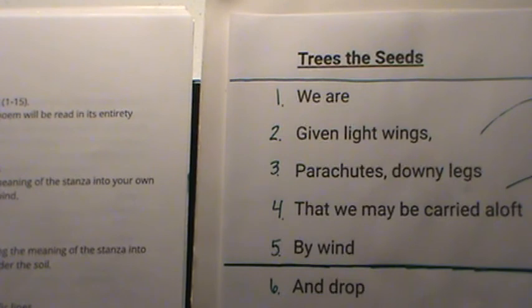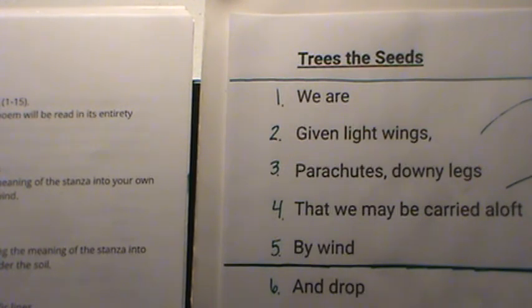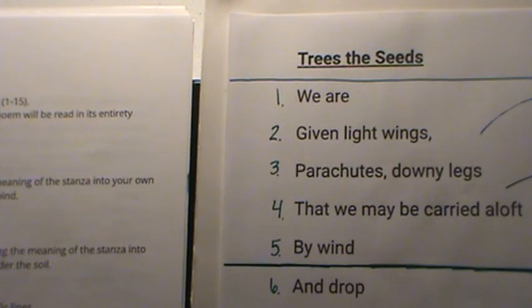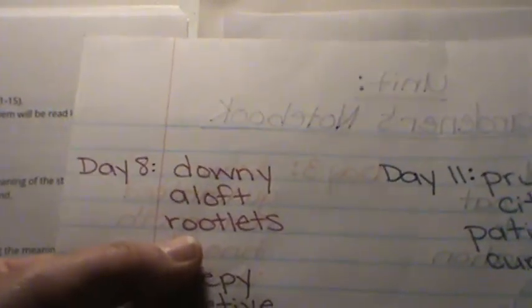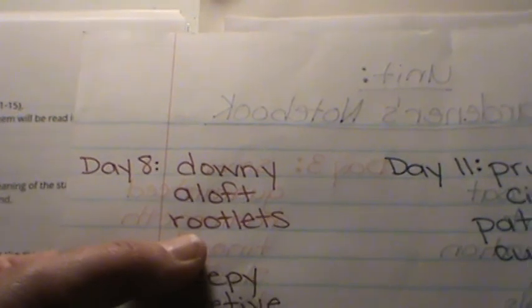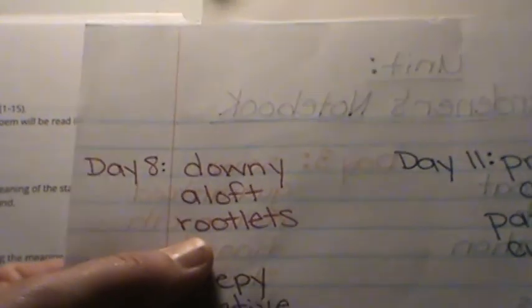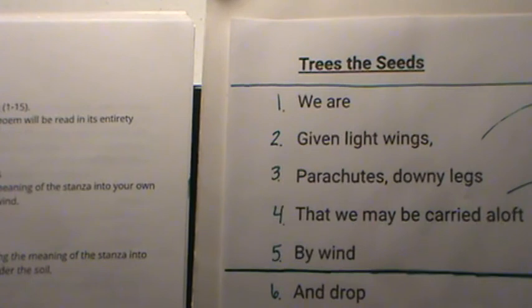Since we're not in class, I can't chart the poem for all of you to see. The only thing I can do is provide you with this copy so you can see it while I'm reading it. The poem will be read completely all the way through, and then we'll do a task with each portion of those five lines. Today is day 8, so we are adding three vocabulary words: downy, aloft, and rootlets.